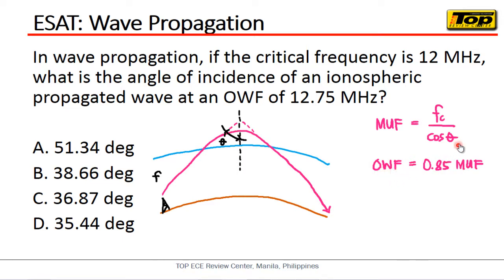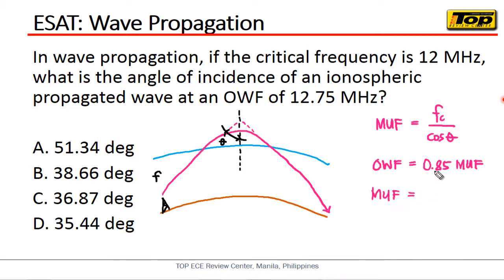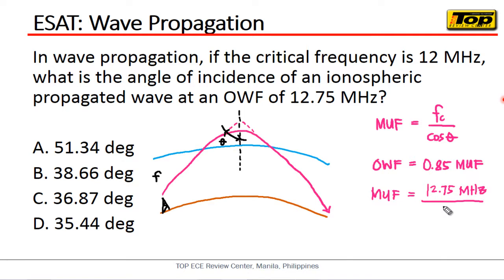So the question is: what is the angle of incidence? Since the OWF is given, we can easily get the MUF. The MUF is equal to OWF divided by 0.85. OWF is given as 12.75 MHz, divided by 0.85, and this gives us a value of 15 MHz. So we now have our MUF.